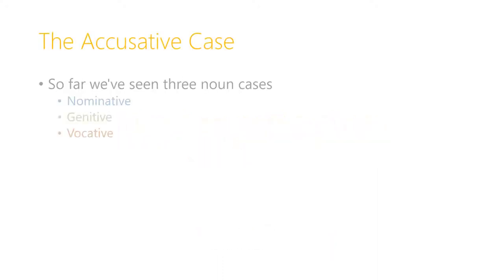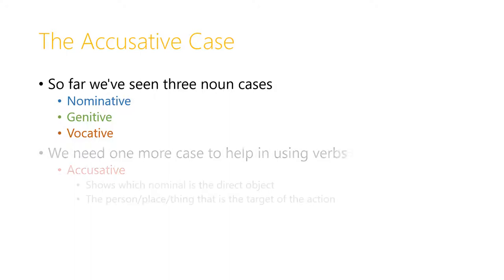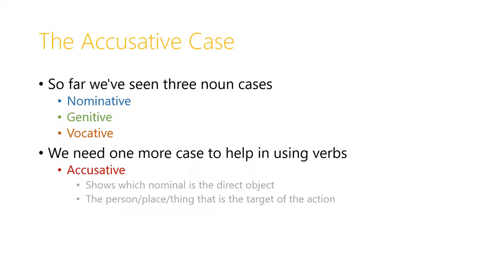The accusative case is the fourth that we've seen. So far we've seen three noun cases: the nominative, the genitive, and the vocative. We need this accusative case to help us in using verbs, because the accusative shows us which nominal is the direct object of the verb — that is, the person, place, or thing that is the target of the action the verb expresses.